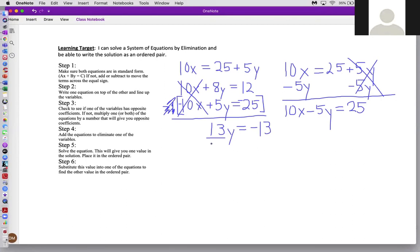12 minus 25, divide both sides by 13. And I get the value of, I'm sorry, divide by 13, y equals negative one. Pause the video and tell me what the next step would be.